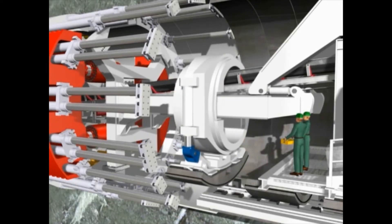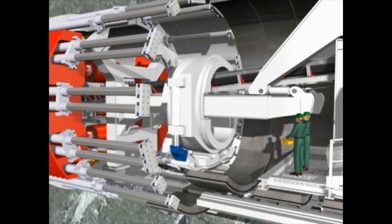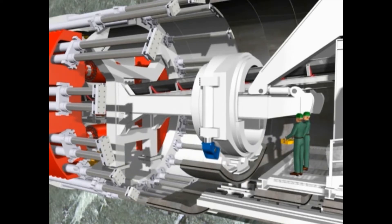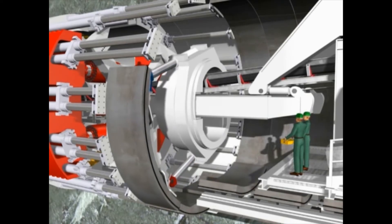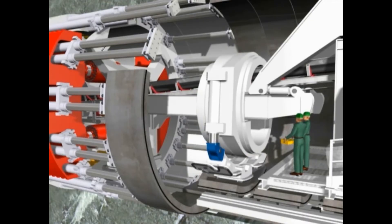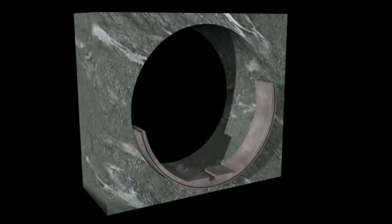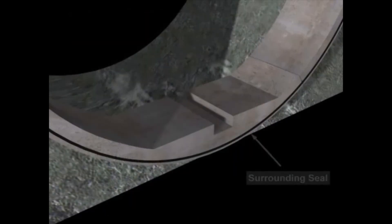The actual lining of the bored tunnel is performed in the rear area of the shield. A complete tunnel ring consists of seven pre-finished reinforced concrete elements, so-called segments. Each segment is provided with a surrounding seal, which prevents the penetration of water into the tunnel.